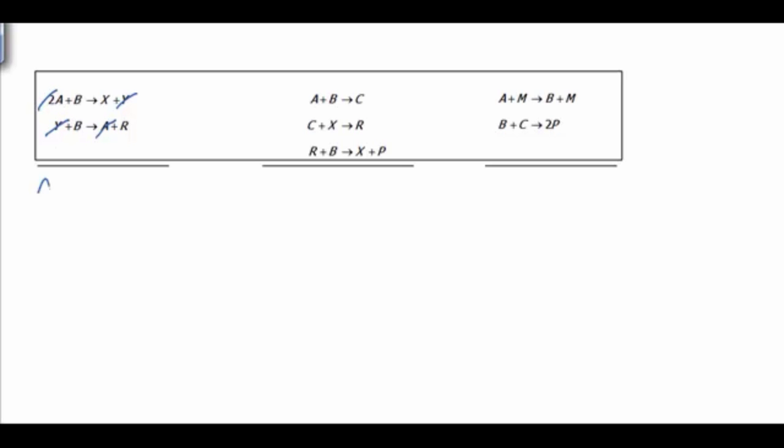And what we see are these are reactants, these are products, and that y is an intermediate. Hopefully you can see that y was created in the first step, used in the second step. That makes it an intermediate.